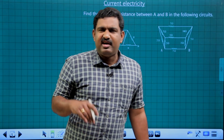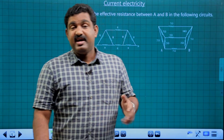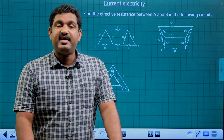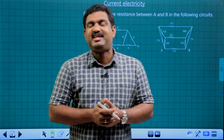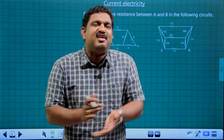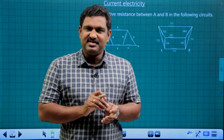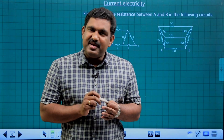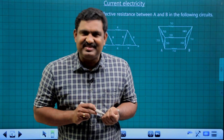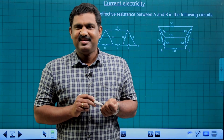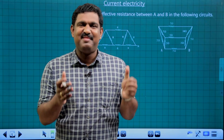You will learn the effective resistance between A and B methods. The methods are symmetry methods: parallel symmetry, perpendicular symmetry, point symmetry, line symmetry, and plane symmetry. There is a specific type of symmetry called path symmetry.